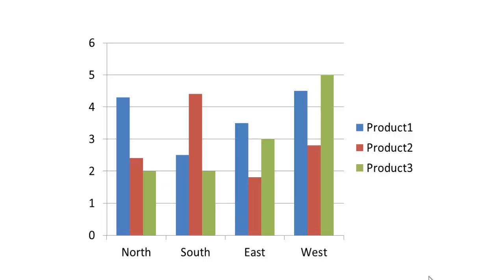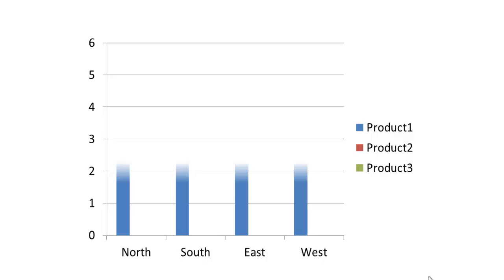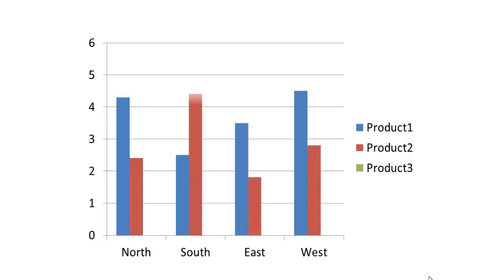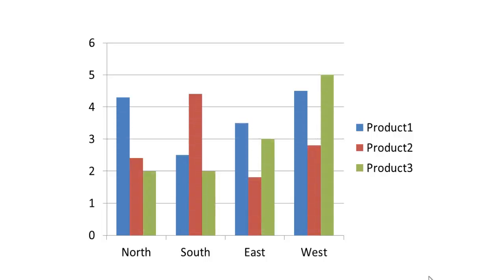For example, in this particular chart, we're having the chart come up - the background come up first, and then the series of data: product one comes up, product two comes up, and then product three comes up. Now that's one way of doing it. There's another way where we have the categories come up one at a time.